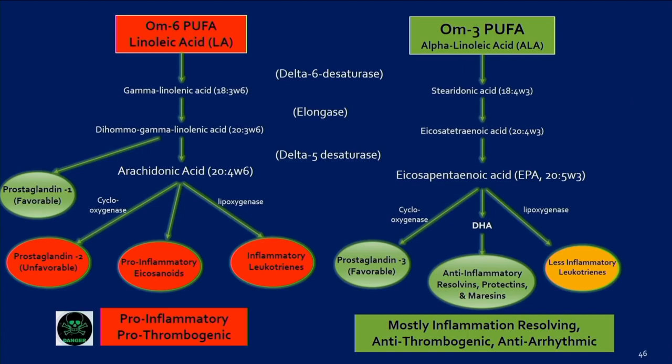Now this is how we get to inflammation. Omega-6 PUFA produces prostaglandin 2 series — unfavorable pro-inflammatory eicosanoids — and leukotrienes, which are totally pro-inflammatory, pro-thrombogenic, and clot-inducing. Omega-3s, on the other hand, are anti-inflammatory, creating resolvins, protectins, and maresins — mostly inflammation-resolving, anti-thrombogenic, and anti-arrhythmic.